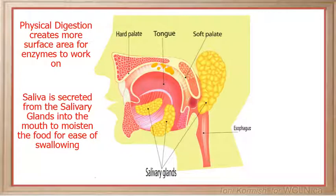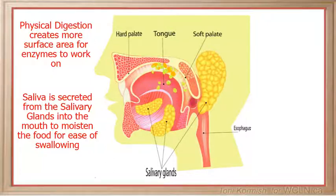Saliva is secreted from the salivary glands into the mouth and combines with lipids to moisten the food for ease of swallowing.